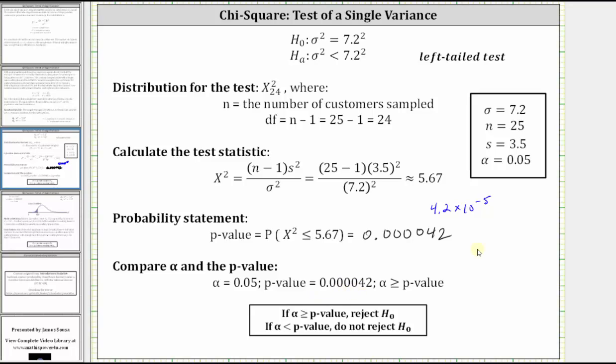The next step is to compare alpha and the p-value to determine whether we reject the null hypothesis or do not reject the null hypothesis. Notice how the p-value is low compared to alpha. When the p-value is low, the null must go. Or more formally, because the p-value is less than or equal to alpha, or because alpha is greater than or equal to the p-value, we reject the null hypothesis.